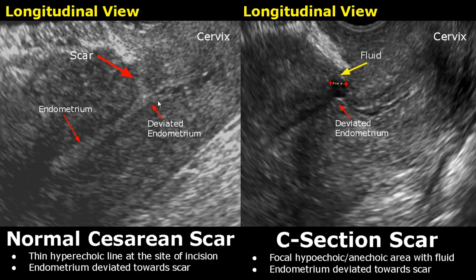On the right side is another image of a C-section scar. There is a focal hypoechoic or anechoic area with some fluid, and the deviation of endometrium is greater here. These are the appearances of a caesarean scar.